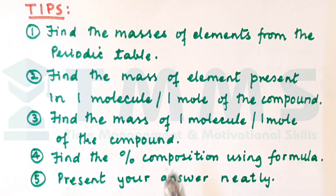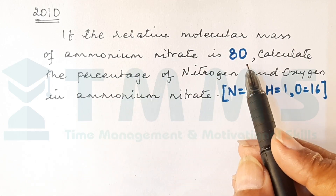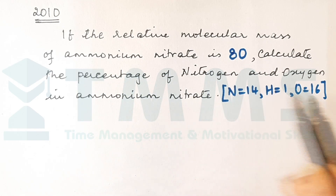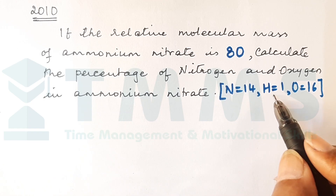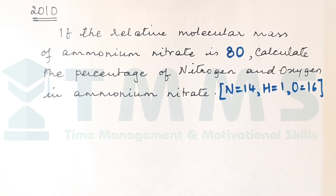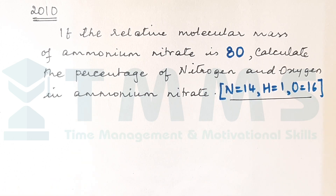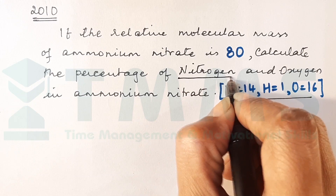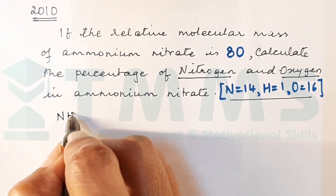Let us see how we apply these tips. We take the 2010 question of ICSE board examination. The question reads: if the relative molecular mass of ammonium nitrate is 80, calculate the percentage of nitrogen and oxygen in ammonium nitrate. We are given: nitrogen is 14, H is 1, and O is 16. Step one — finding masses — is already provided. Tip 2: find the mass of the elements in one molecule of ammonium nitrate, so we write the formula: NH4NO3.